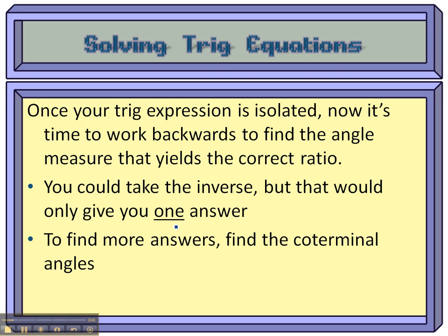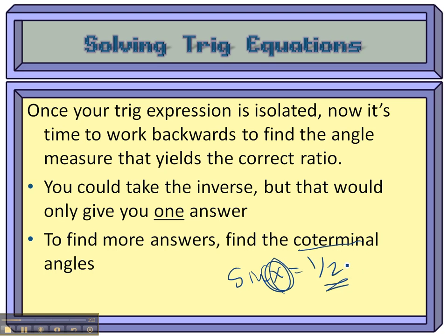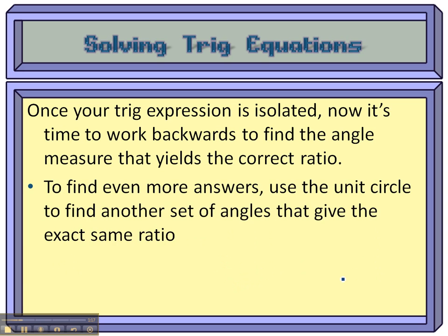Once you get one of the angles — you get that by working backwards — we have something like sine x equals a half. We're looking for the angle measurement that gives us the ratio of a half. The best way to find that is on the unit circle. So we find one of the angle measurements, but there's an infinite number of answers, so we take all the coterminal angles. To get all the coterminal angles, once we find one, we just add the period to it. There are still more angles — to get the other set, we use the unit circle again and find where something equals the same ratio.